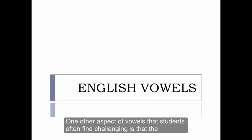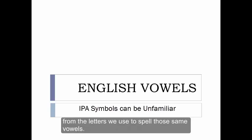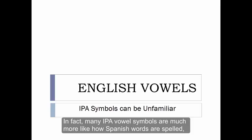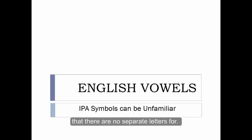One other aspect of vowels that students often find challenging is that the symbols that the IPA uses to represent vowels are almost always different from the letters we use to spell those same vowels. In fact, many IPA vowel symbols are much more like how Spanish words are spelled, with a number of new symbols added in to represent vowels that there are no separate letters for.